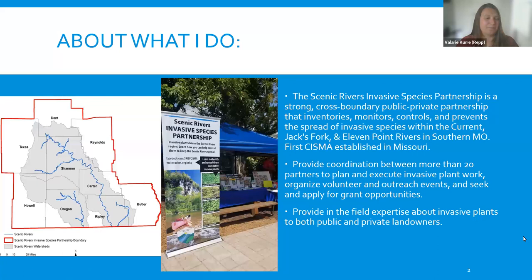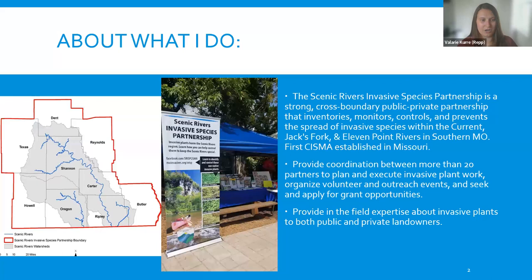The Scenic Rivers Invasive Species Partnership, or SRISP, works together with lots of different managers. We focus on the counties that cover the Current Jack's Fork and Eleven Point Rivers in southern Missouri, which are designated scenic rivers — the only scenic rivers found in Missouri. If you've had the pleasure to float one of these rivers, you know how special a place this is, filled with lots of unique and ecologically important habitats. That's why we're really focusing our invasive species work here.